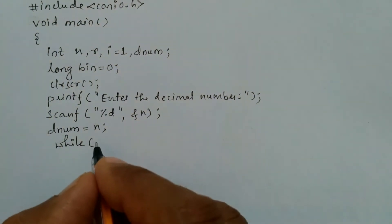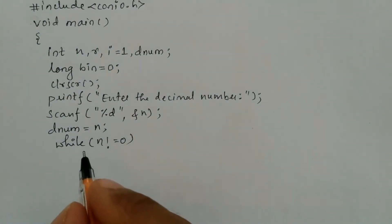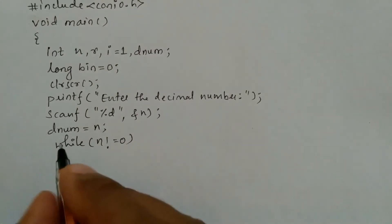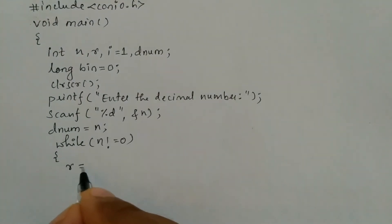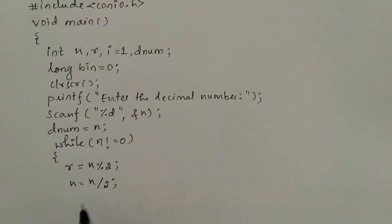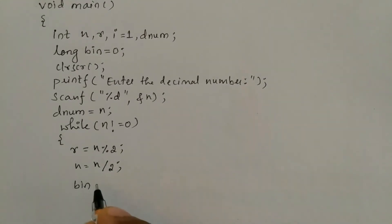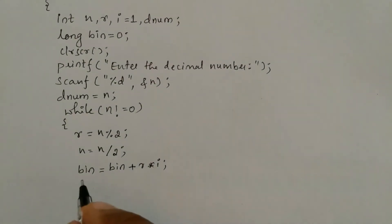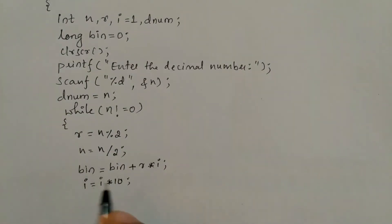Now we use a while loop with the condition n not equal to zero. Inside the loop: r equals n modulo 2 to get the remainder; n equals n divided by 2 (integer division) to get the quotient; binary equals binary plus r times i to accumulate the binary result; and i equals i times 10 to shift the place value. Then we close the while loop brace.